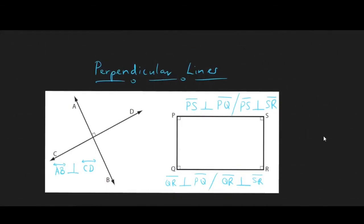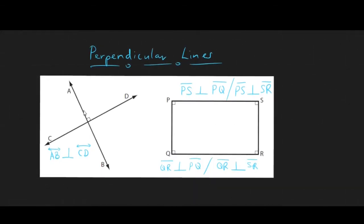Perpendicular lines are lines that have a measure of 90 degrees between them. In this example, ray AB is perpendicular to DD. In this rectangle, line segment PS is perpendicular to PQ and SR, and QR is also perpendicular to PQ and SR.